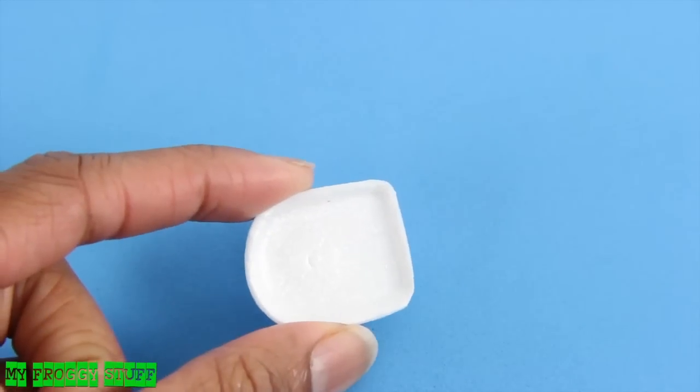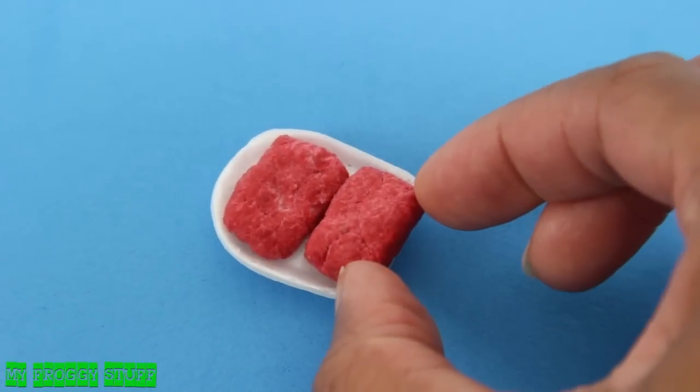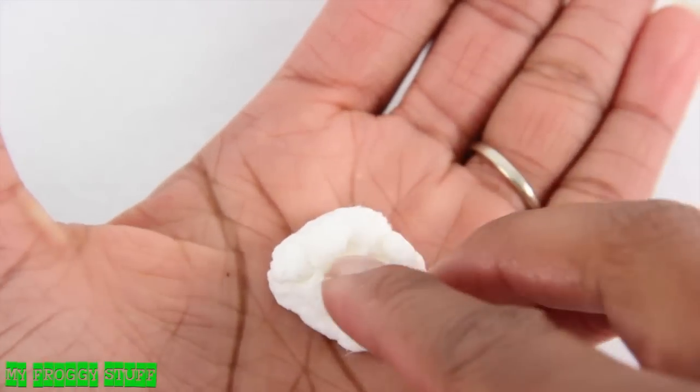Cut an egg carton to make a styrofoam tray to hold the ground meat, or keep it white to make mashed potatoes.